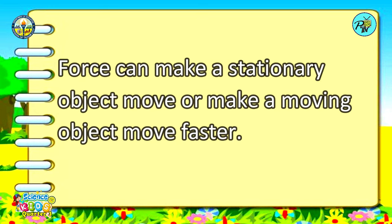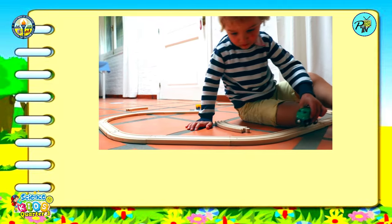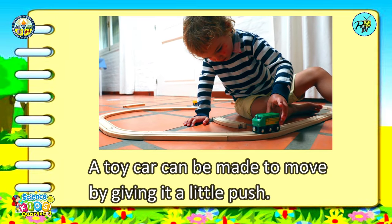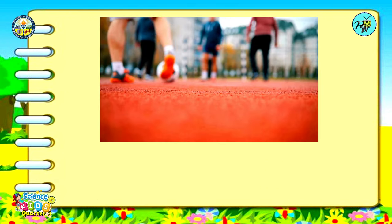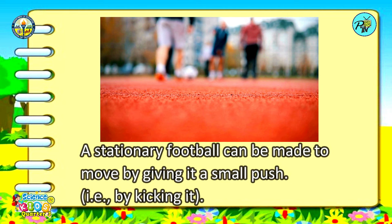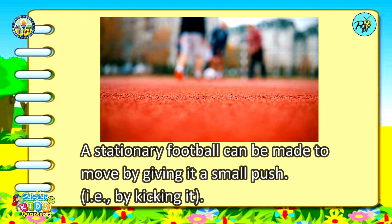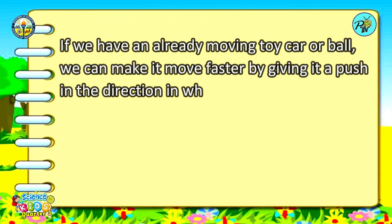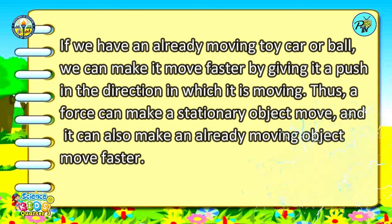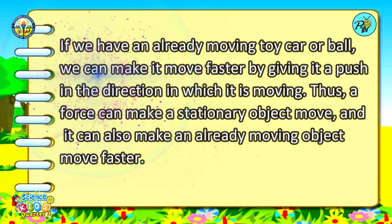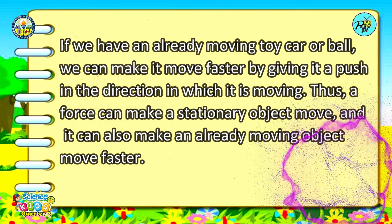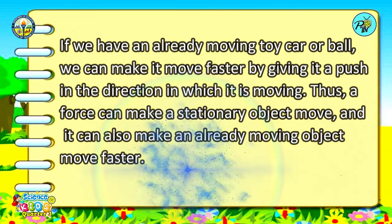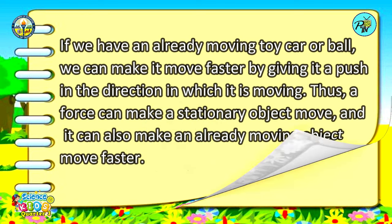Force can make a stationary object move or make a moving object move faster. A toy car can be made to move by giving it a little push. Similarly, a stationary football can be made to move by giving it a small push — for example, by kicking it. If we have an already moving toy car or ball, we can make it move faster by giving it a push in the direction in which it is moving. Thus, a force can make a stationary object move, and it can also make an already moving object move faster.